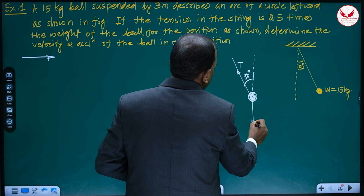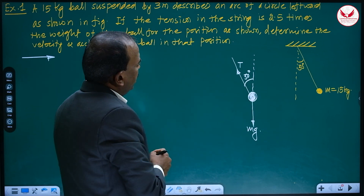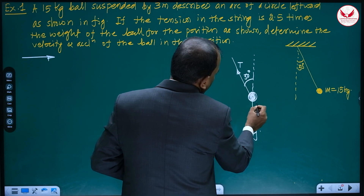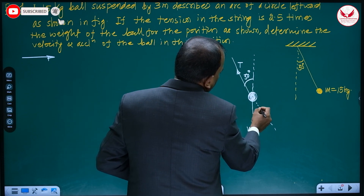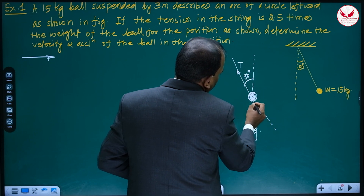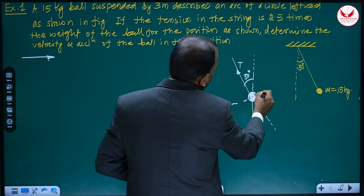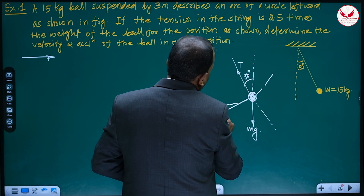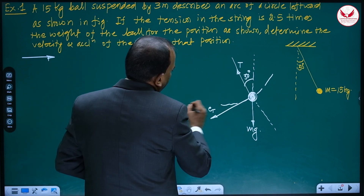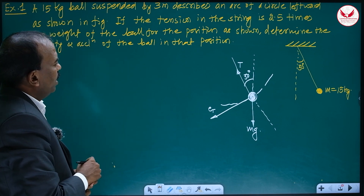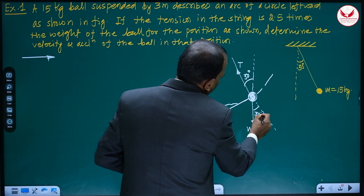The weight of this bob — it is our ball — acts as Mg vertically downward. The tension acts along the string direction. This angle and that angle will both be 30 degrees. The direction of motion is the tangential direction, and the direction along the radius is the normal direction.